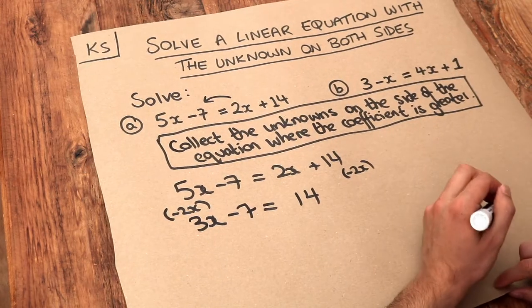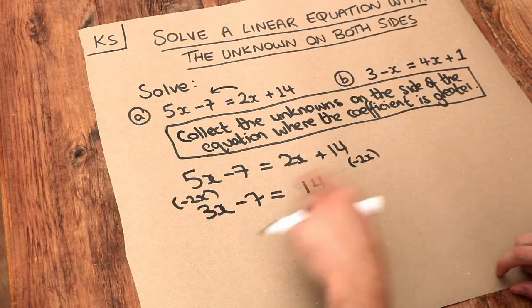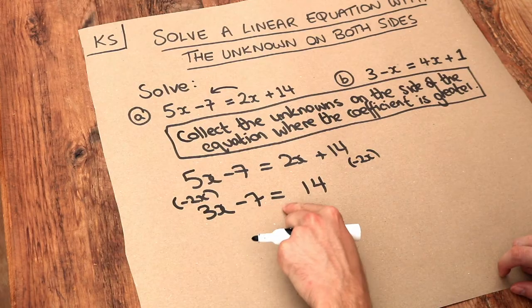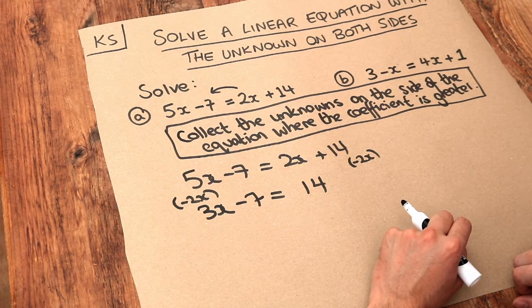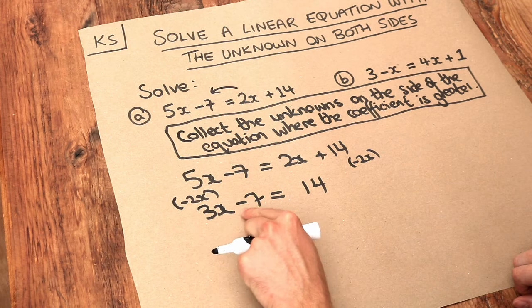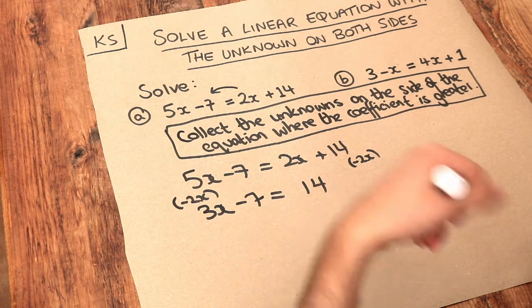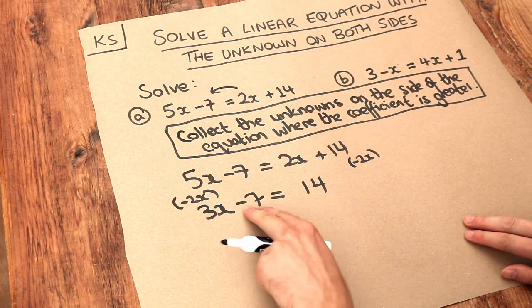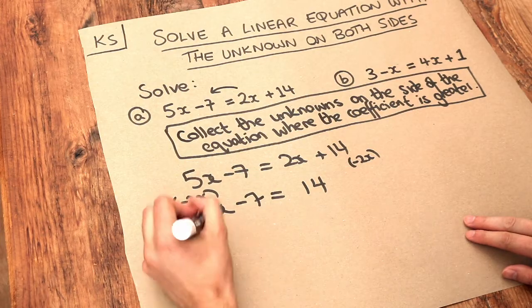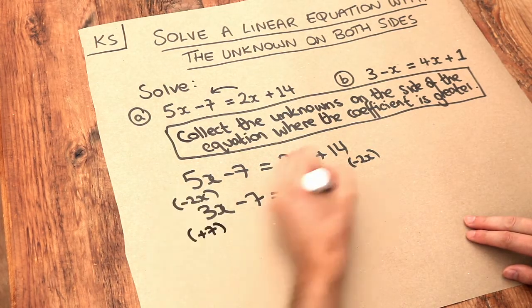And then we have an equation like we've solved before. We've got 3 lots of X minus 7 is equal to 14. Now if X was multiplied by 3 and then we subtracted 7, we undo the last thing first. We want to get rid of that minus 7 that we did last and therefore we add 7 to both sides of the equation.